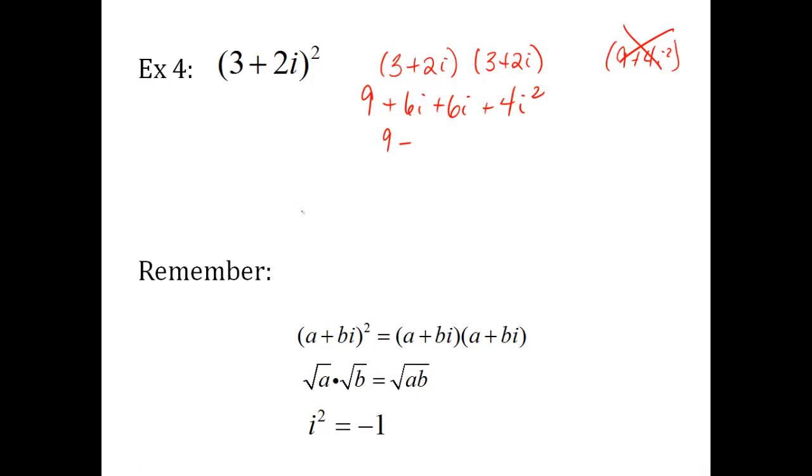So let's simplify. Nine plus twelve i plus four times negative one. Four times negative one is negative four. Oh, I forgot my i right there. Nine minus four is five plus twelve i. There it is. There's my solution.